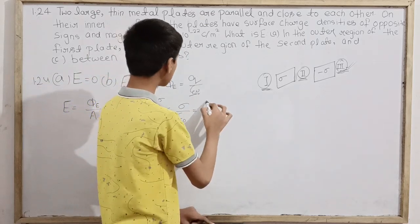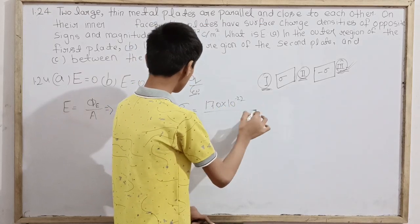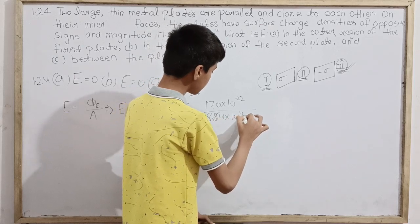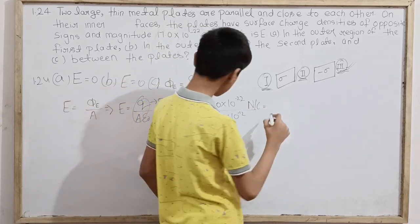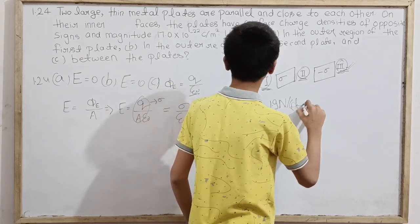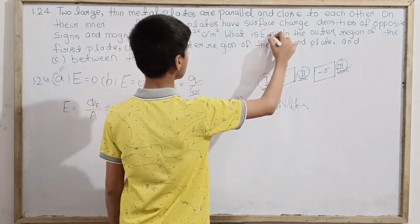Substituting the value of sigma as 17.0 into 10 power negative 22 over 8.85 into 10 power minus 12 newton per coulomb, this gives us 1.9 newton per coulomb. This is the electric field between the plates.